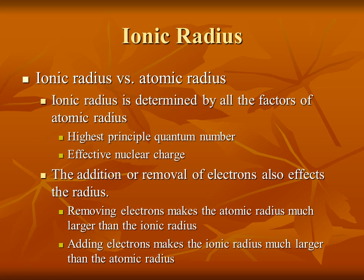To go from a neutrally charged atom to an ion, you need to add or remove some electrons. Removing electrons makes the ionic radius much smaller than the atomic radius — in other words, you take away electrons, you make the thing smaller. Adding electrons makes the ionic radius much larger than the atomic radius. Let's look at the fundamental reasons why, in terms of effective nuclear charge, highest principal quantum number, and electron configurations.